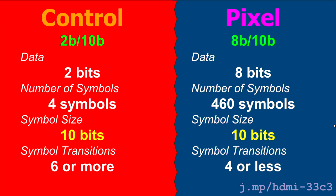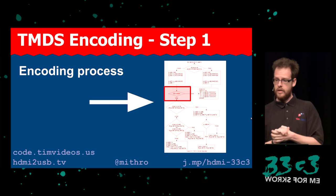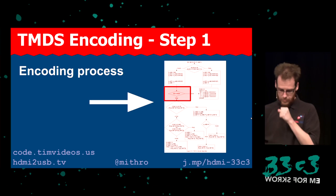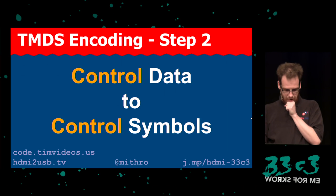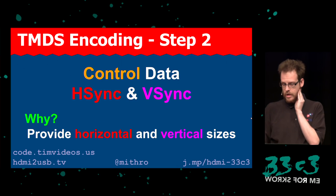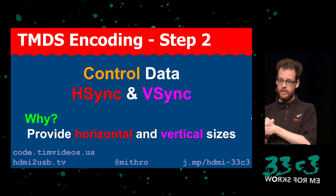Those periods during which control data is transmitted were to allow the electron beam to return to where it needs to start transmitting the next set of data. That's why it exists. The encoding systems for control data and pixel data are quite different. The key thing is that even though the encoding systems differ, the output is always 10 bits. That's the first step — determining whether it's pixel data or control data.